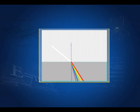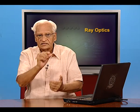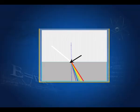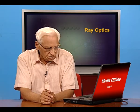White light entering a slab shows the colors separating: red is the least refracted and violet is the maximum refracted. After they come out, they are all parallel in a very narrow beam, and in our eyes they mix up and we see white light again. However, we shall see that if instead of a slab we have a prism, then the colors will separate.